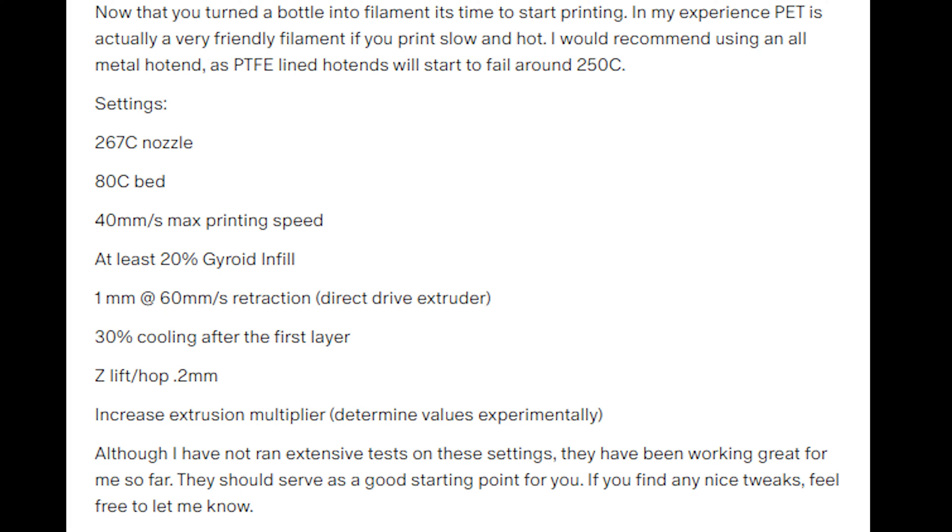Now it's time to 3D print. Here are some settings that will get you started. 267 degrees Celsius. I'd recommend using an all metal hotend. PTFE lined hotends start to degrade around 250 degrees Celsius. 80 degrees on the bed. Print slow using gyroid infill. Good retraction. 30% cooling after the first layer. Make sure there's a z hop. And then increase the extrusion multiplier, because remember that filament is hollow. So you need to figure that out experimentally. Shout out to okweird5779 on Reddit for discovering those settings.